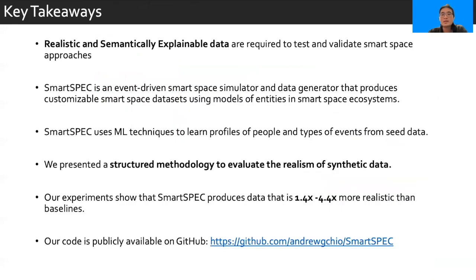The key takeaways that I would like to conclude my talk on are that, first, realistic and semantically explainable data are required to test and validate smart space approaches. To this end, we developed SmartSpec, which is an event-driven smart space simulator and data generator, that produces the necessary smart space datasets using models of sensors, spaces, events, and people. We further learned profiles of people and types of events by utilizing ML technologies, and then we presented a new structured methodology that evaluates the realism of datasets. In our experiments, we show that SmartSpec is able to do 1.4 times to 4.4 times better than the best baselines in generating both trajectories and occupancies. As mentioned before, SmartSpec code is publicly available on GitHub, and thank you all for listening to my talk today.